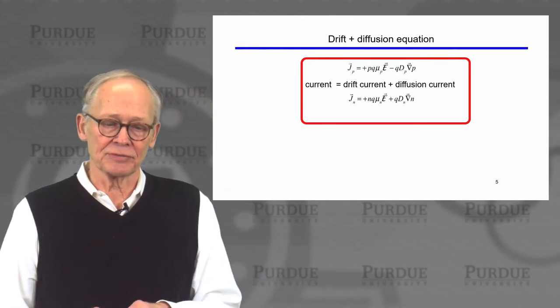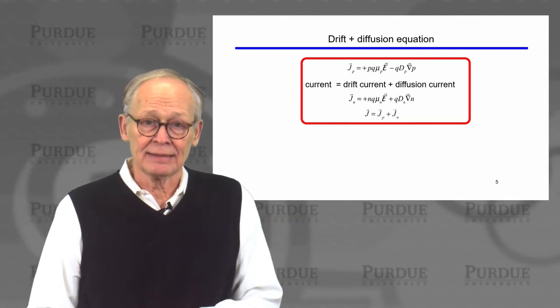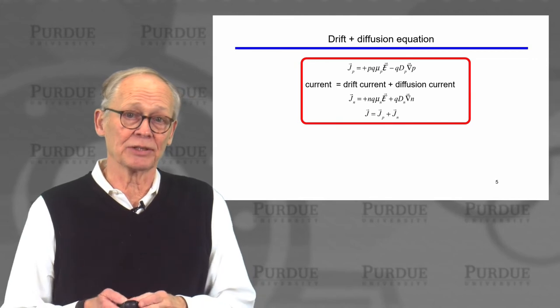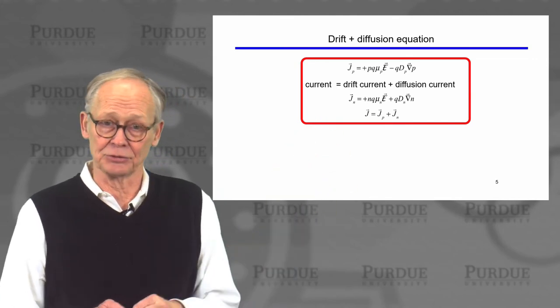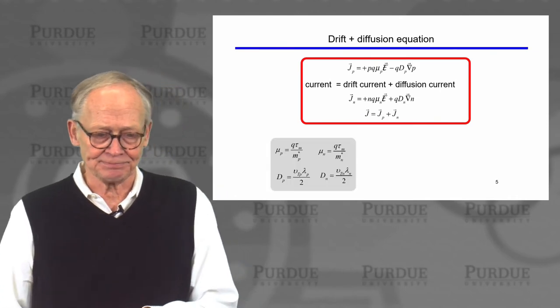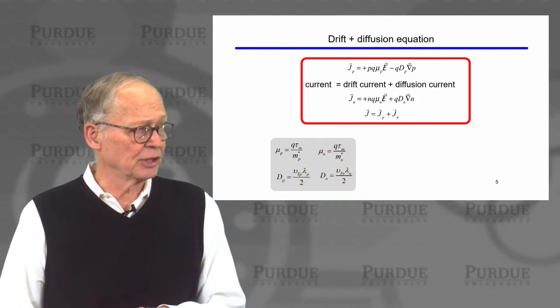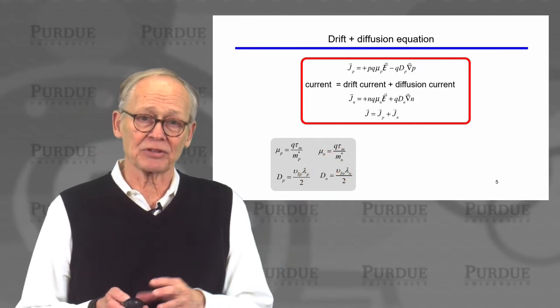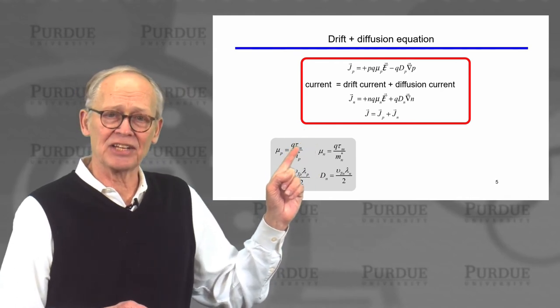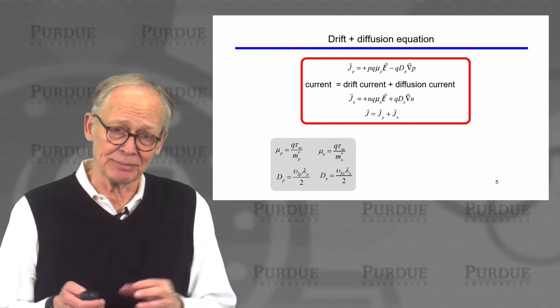So this is our drift diffusion equation. We have one for holes, we have one for electrons. In general, we have both electron and hole currents. If we want the total current in the semiconductor, we simply add the two. Oftentimes we'll find one dominates versus the other. We also saw that we can relate the parameters in the drift diffusion equation to some microscopic parameters, things like momentum relaxation times or scattering times, effective mass, thermal velocity, mean free path.